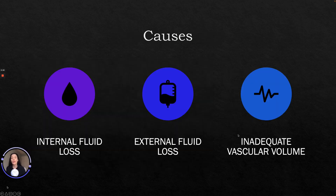The causes of hypovolemic shock include acute blood loss of around one-fifth of the total volume and internal fluid loss, which can result from hemorrhage or third-space fluid shifting. Also external fluid loss which results from severe bleeding, severe diarrhea, diuresis, or vomiting — leading to inadequate vascular volume which decreases venous return and cardiac output.